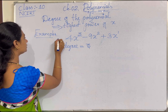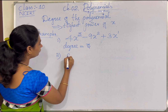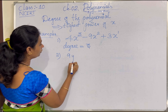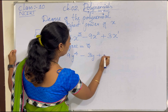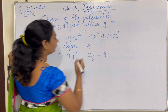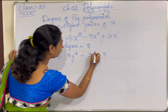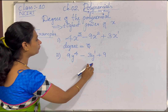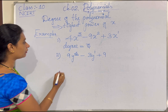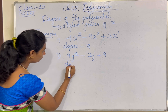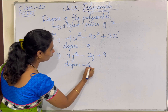Let me discuss one more example: 9y⁴ - 3y + 9. Here we observe the powers of the variable: y¹ and y⁴. The highest power of the variable is 4, so the degree of the polynomial expression is 4.